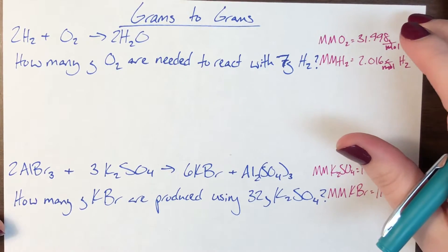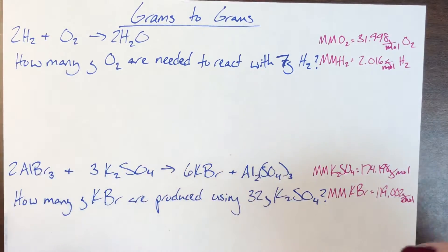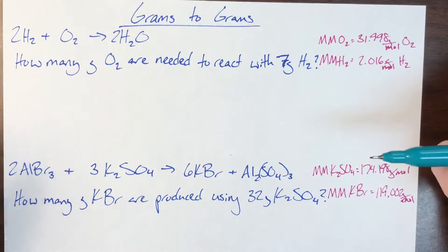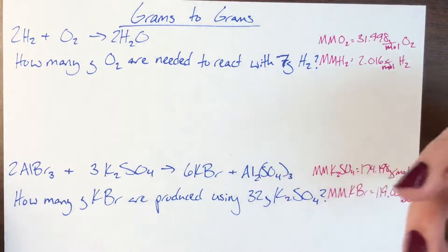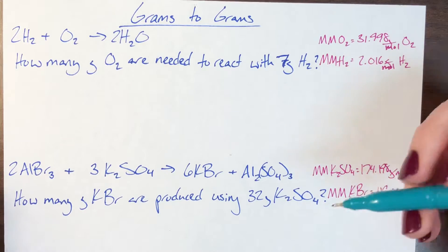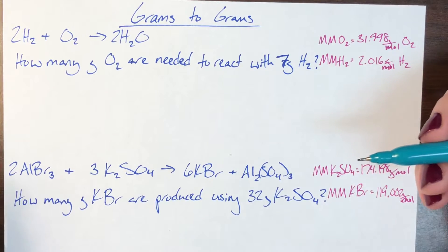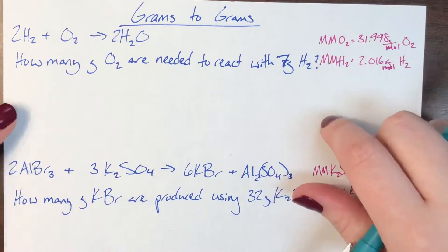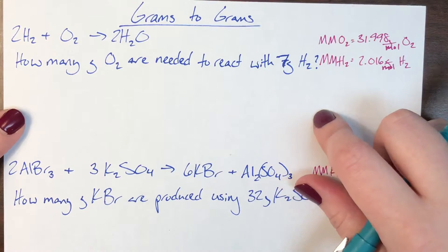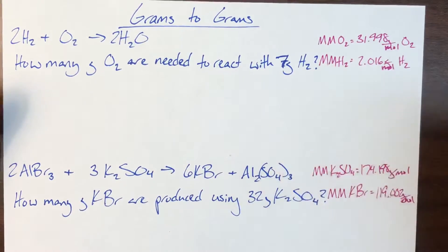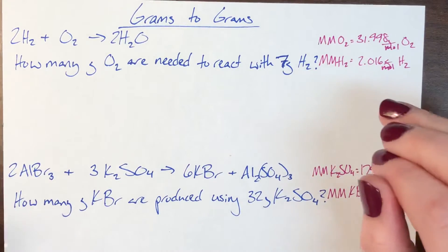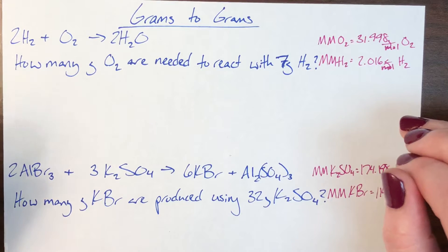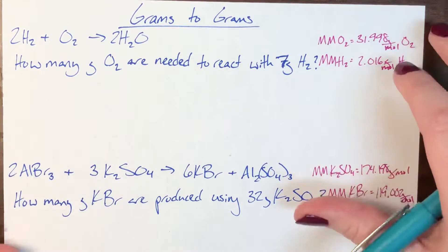Today we're going to be talking about how to go from grams of one compound to grams of another. This is particularly useful in laboratory settings so you can figure out how much of a product you actually expect, and you can tell how good at the lab you actually were depending on how much your lab results match these. This is probably the most applicable to your average chemist's life.